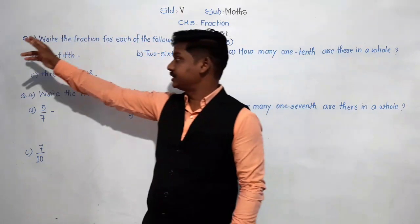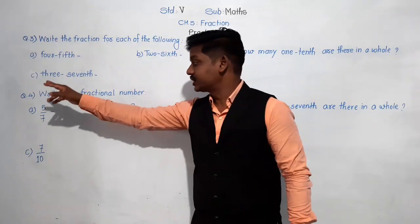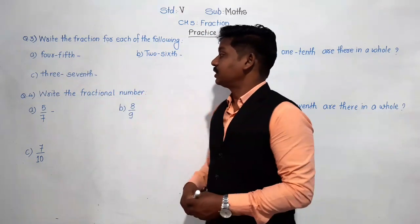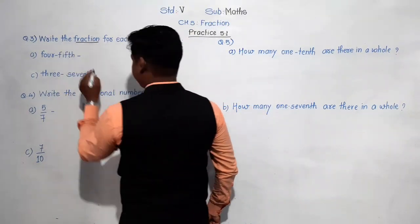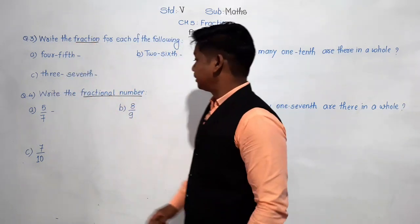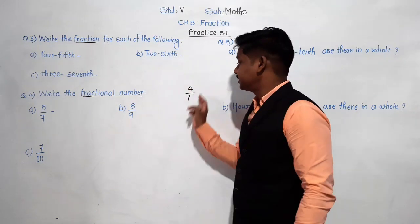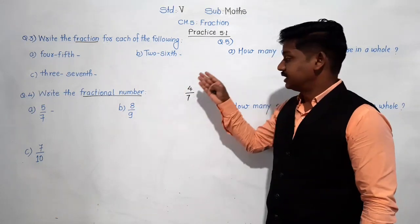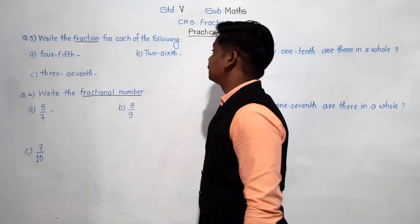In Practice 5.1, question number three is: write the fraction for each of the following, and question number four is: write the fractional number for each of the following. Now, fraction means what and fractional number means what? Yesterday I told you — when we write in numerical form, like four upon seven, when we write a fraction in this form, it's called a fractional number.